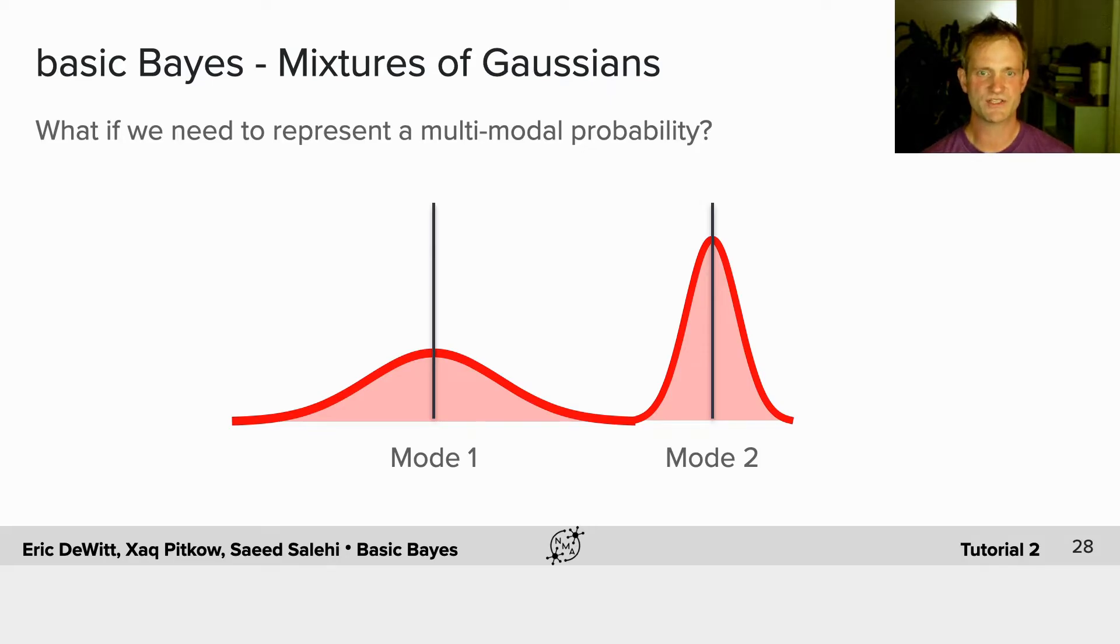Well, what if we wanted to represent a multimodal probability? That is something where the true state might be in one place or another at different times.